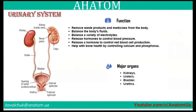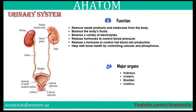Next, the major organs of the urinary system are the kidneys, ureters, urinary bladder, and urethra. The main functions include: removing waste products and medicines from the body, balancing body fluids, balancing electrolytes, releasing hormones to control blood pressure and red blood cell production, and helping with bone health by controlling calcium and phosphorus.